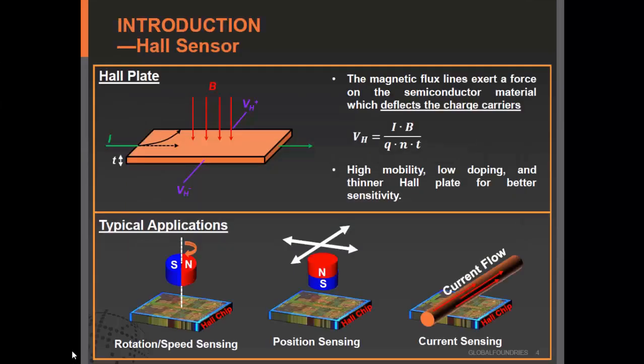As we all know, when current passes through a thin piece of semiconductor material, an external magnetic field will exert force on the charge carriers, causing a different potential between two points. By using this Hall phenomenon, we can do a lot of things. For example, we can sense the rotation or speed of a magnet, mirror the position change of a magnet using a Hall chip, and also detect current flow through a thin wire.